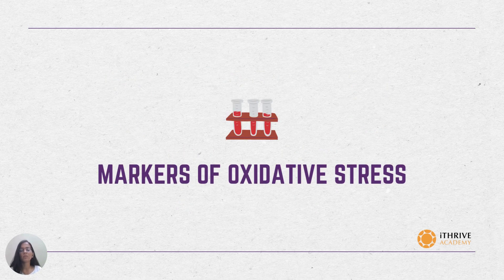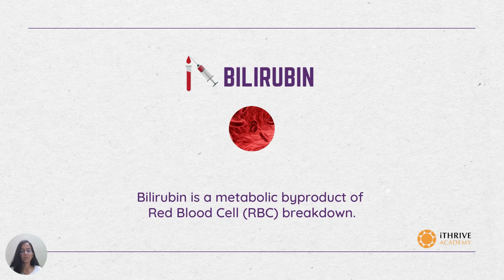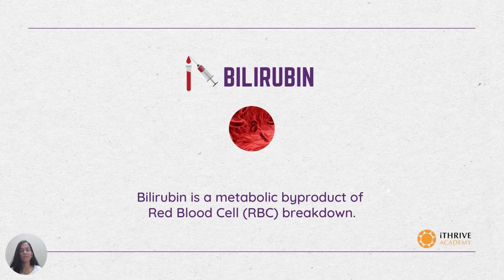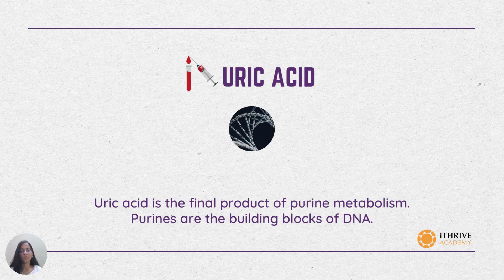Moving on to the markers of oxidative stress. The first being bilirubin. Bilirubin is a metabolic byproduct of red blood cell breakdown. It also exhibits potent antioxidant properties and thereby prevents oxidative damage.